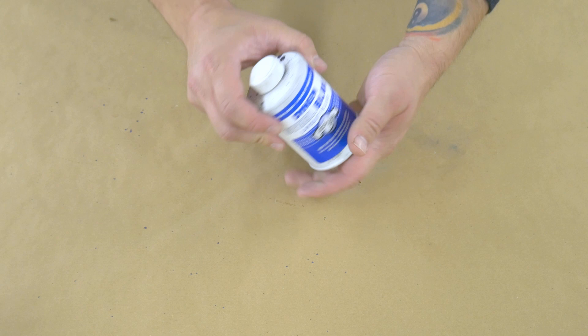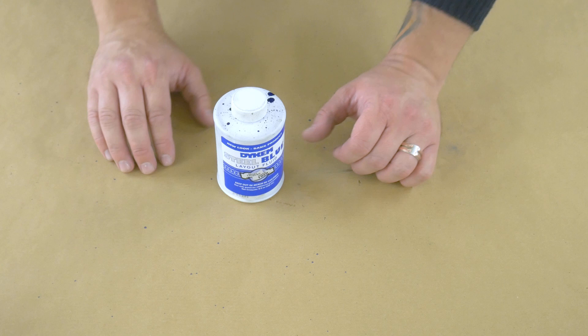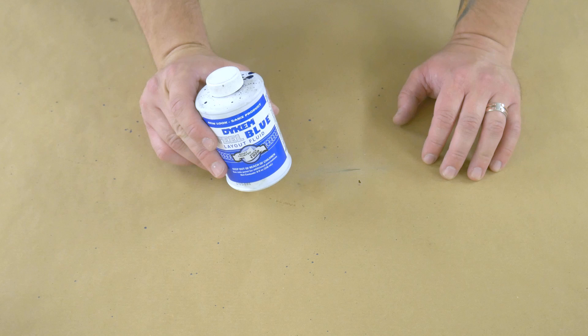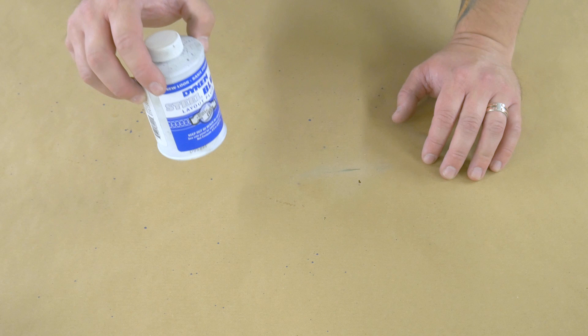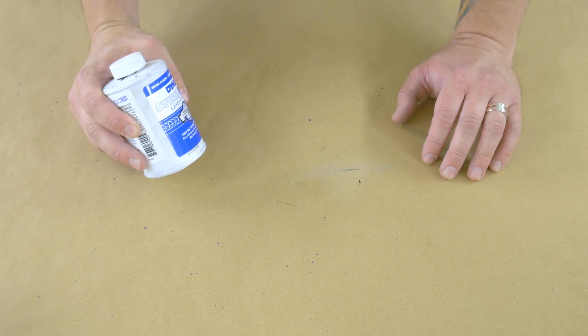But today we are talking about this stuff, which is die-chem steel blue layout fluid. Now if you say die-chem, people generally know what you mean. It's become somewhat synonymous with layout dye, much like Hoover or something like that. So people generally know that you mean layout blue, but this does come in other flavors.